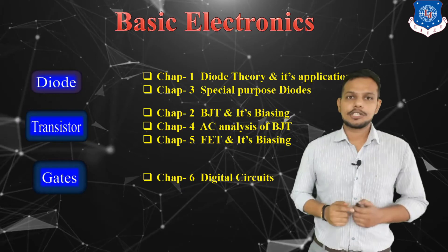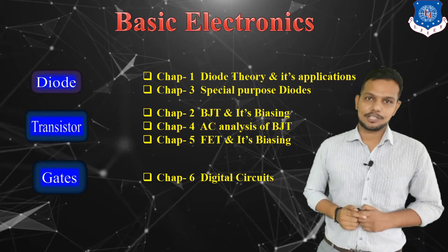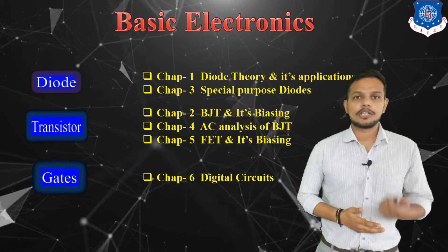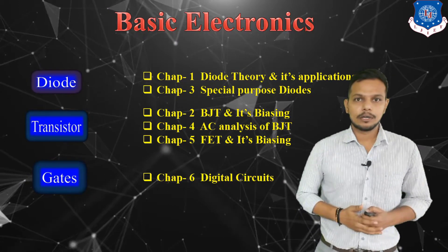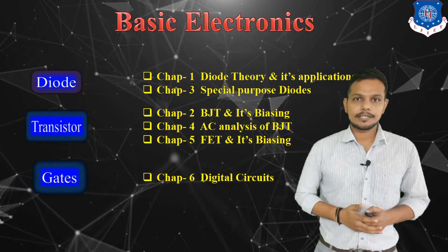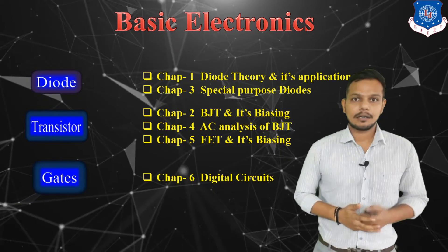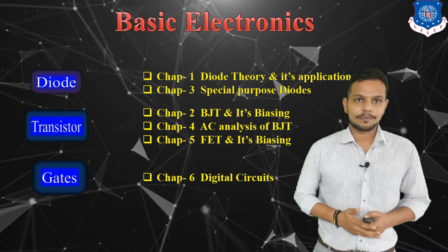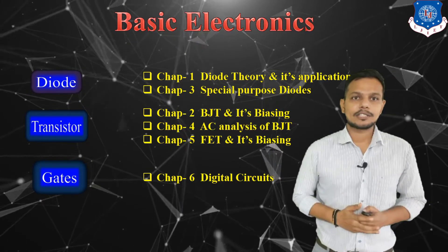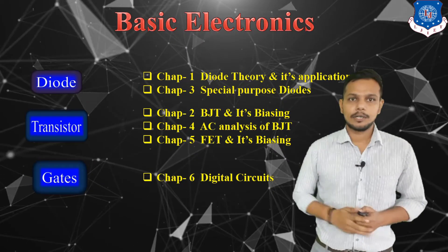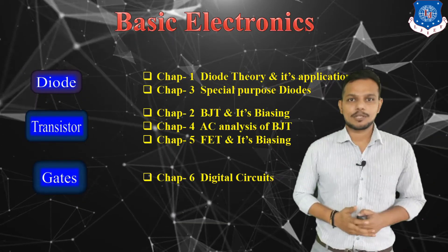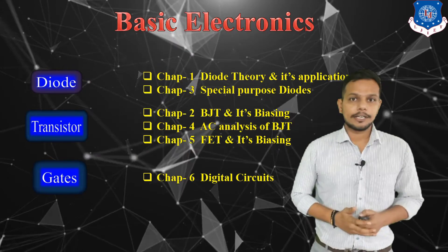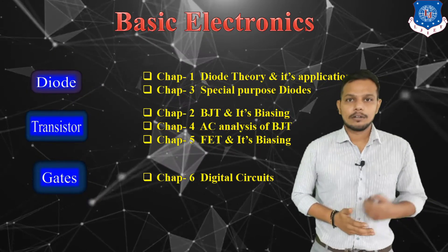Chapter number one is diode theory and its applications, in which we are going to discuss about construction and working principle of diode, its VI characteristics, and its applications like rectifier, clamper, and others. Then chapter number three is in which we are going to discuss about special purpose diodes like LED, Schottky diode, Zener diode, and photo diode.